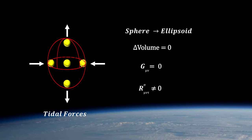By the way, this sphere to ellipsoid phenomenon is called a tidal effect, because it is how the Moon creates tides on the Earth.